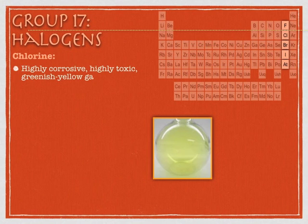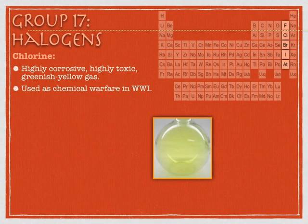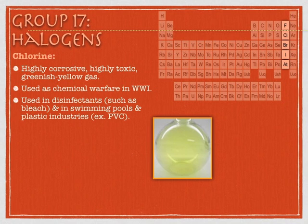Chlorine is best known probably for disinfecting swimming pools and for killing people in World War I as a chemical warfare agent. When chlorine gas was launched against the enemy, the heavy yellow-greenish gas would sink into the trenches — so if you dove for cover, you'd get a mouthful of it. Essentially your lungs fill up with fluid and you drown from the inside out. But in smaller concentrations, it makes a great disinfectant, so you'll see it in bleach and swimming pools. Chlorine is also found in PVC — polyvinyl chloride pipes.